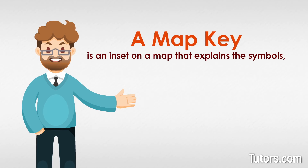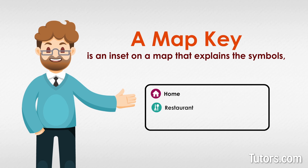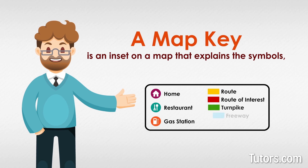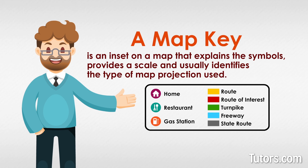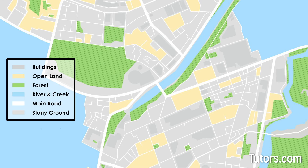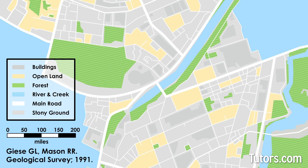A map key is an inset on a map that explains the symbols, provides a scale, and usually identifies the type of map projection used. We use the terms map key and map legend interchangeably, but technically, the key is part of the map legend.